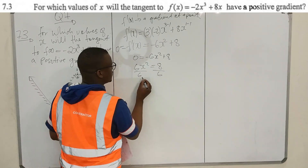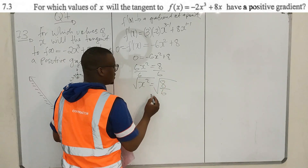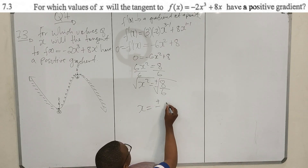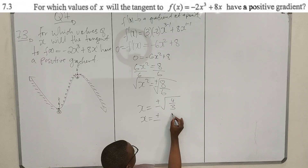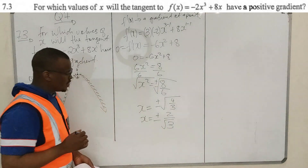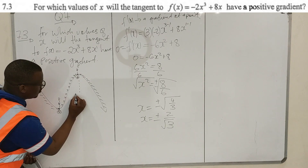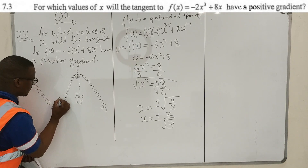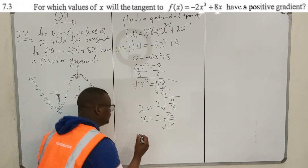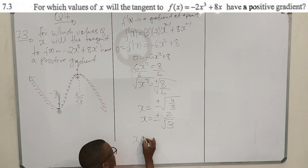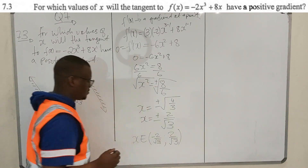Simplifying, x equals plus or minus 2 over the square root of 3, which is plus or minus 2 over 3 in simplified form. The turning point on the right has x-coordinate 2 over 3 and the one on the left has x-coordinate negative 2 over 3. So between these two values the gradient is positive. Therefore the tangent has a positive gradient for x between negative 2 over 3 and 2 over 3.